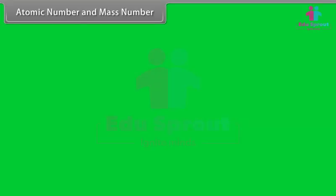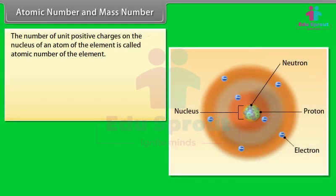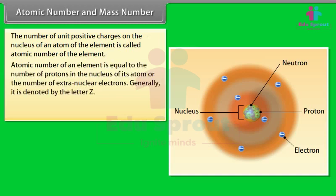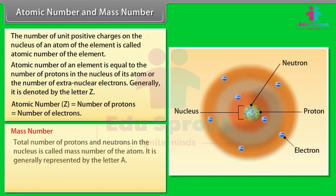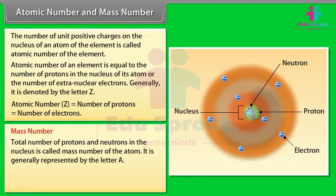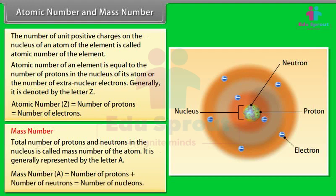Atomic number and mass number: The number of unit positive charges on the nucleus of an atom is called the atomic number, denoted by Z. Atomic number Z equals the number of protons, which equals the number of extra-nuclear electrons. Mass number is the total number of protons and neutrons in the nucleus, represented by A. Mass number A = number of protons + number of neutrons = number of nucleons.